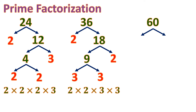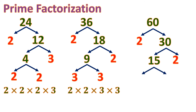Now for 60: we split it into 2 and 30. Then 30 breaks into 15 times 2. And 15 can be separated into 3 and 5, because 3 times 5 is 15. So the prime factorization of 60 is 2 times 2 times 3 times 5.